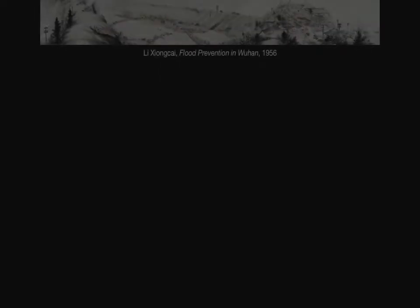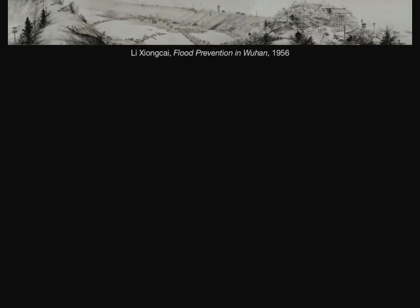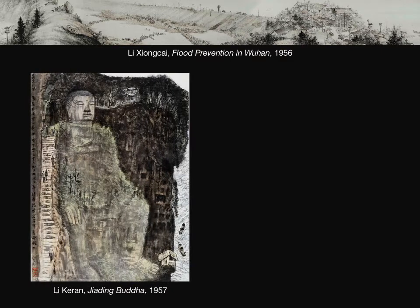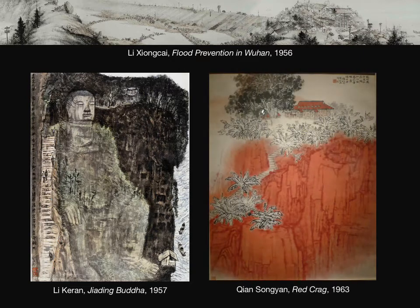At the same time, there were also paintings that employed the traditional techniques of Chinese brush and ink. These brush and ink paintings were in various genres: lengthy panoramic hand scrolls depicting water management, scenic views capturing new cultural heritage tourism, and landscape paintings memorializing sacred revolutionary sites.